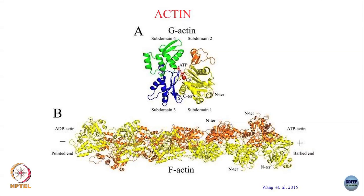This ATP molecule can hydrolyze to form ADP binding, and that releases some energy that goes into stabilizing the structure of this filament. These monomers assemble together to form the actin filament. This is called F-actin, or filamentous actin.